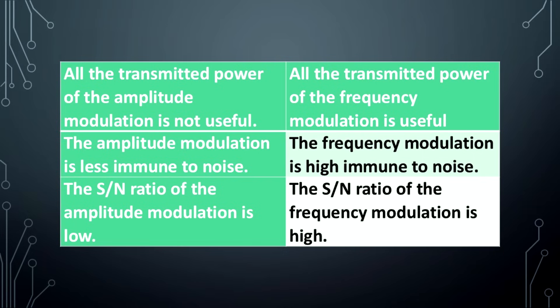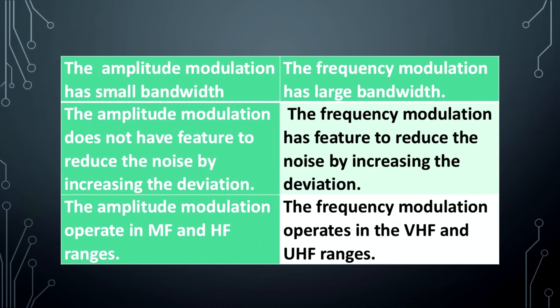The signal-to-noise ratio of amplitude modulation is low. The signal-to-noise ratio of frequency modulation is high. Amplitude modulation has small bandwidth. Frequency modulation has large bandwidth.